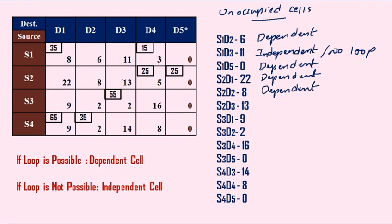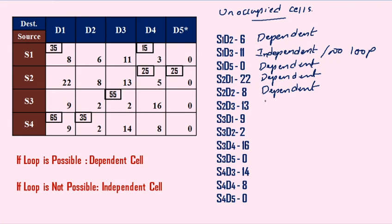Next: S2, D3. It is possible to go right, then upward, left, down, and right again — but no further movement is possible. So a loop is not possible from S2, D3 — it is referred to as independent, no loop.